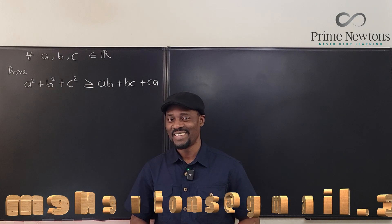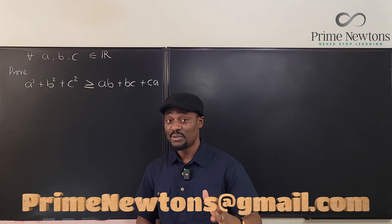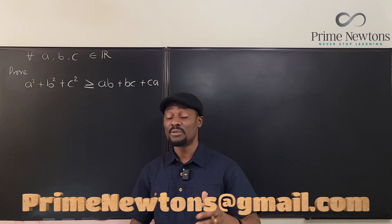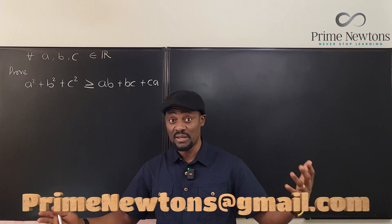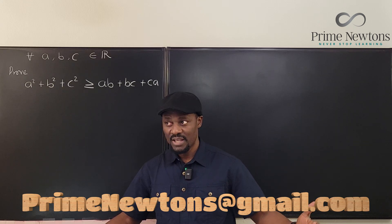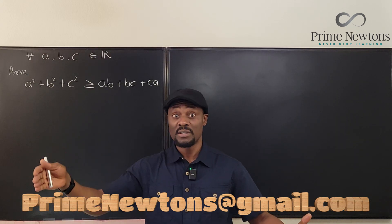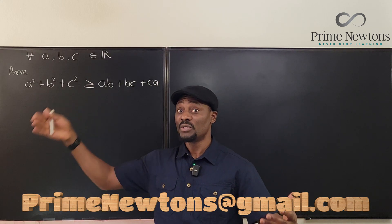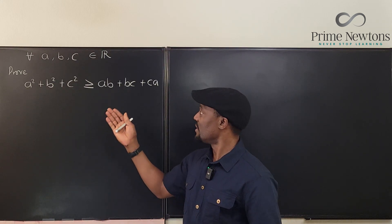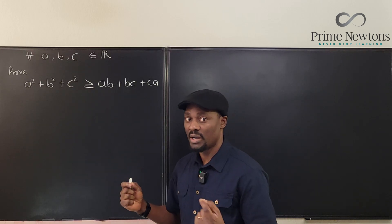Welcome to another video. The idea of this problem is that you're given three real numbers, any three real numbers. If you add up the sums, the squares of those numbers, you should get at least the sum of the pairwise product.